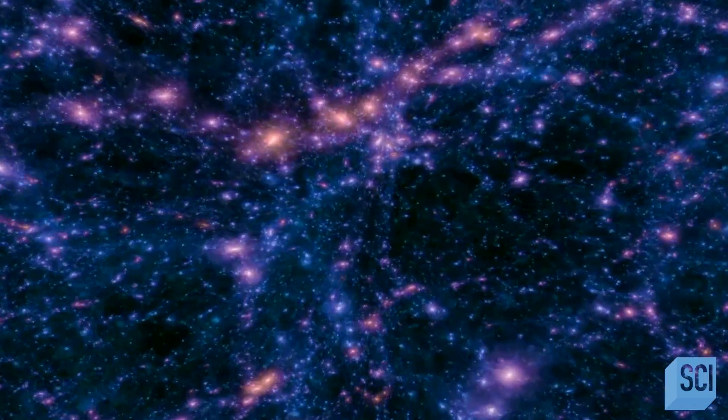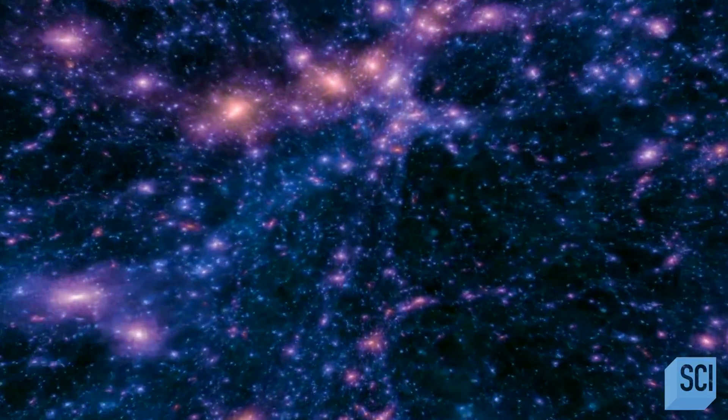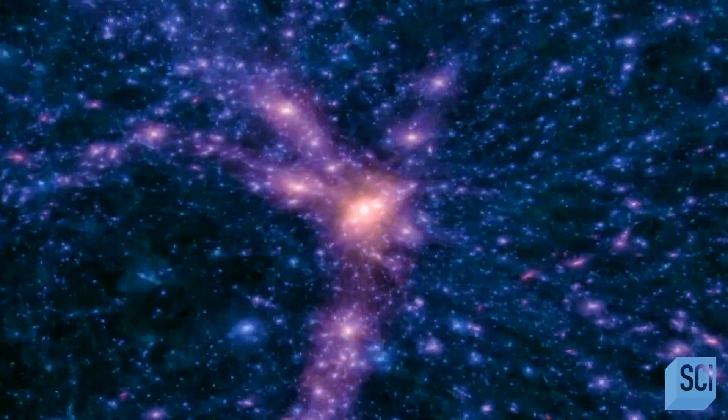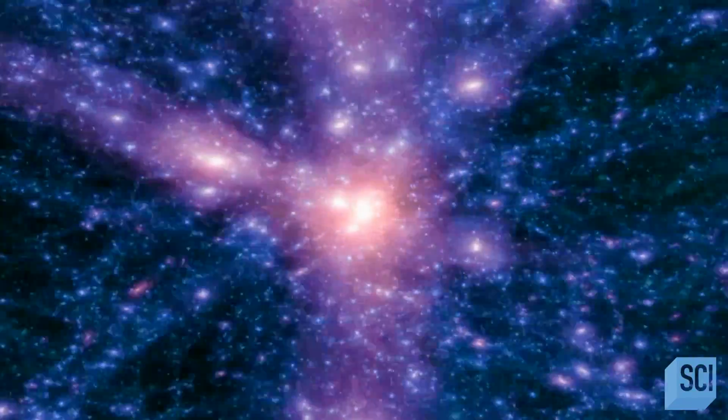When we marvel through our telescopes at the fantastic structure of our universe and its galaxies, you gotta ask, where did that come from? Matter in the universe arranges itself on a vast cosmic web. Galaxies and galaxy clusters are strung out on sheets and filaments. It seems this intricate web is organized by a cosmic architect.